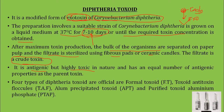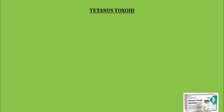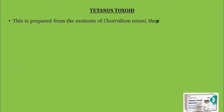After obtaining the crude toxin, the toxoid preparation can be made in any of the four official forms: formal toxoid, toxoid antitoxin floccules, alum precipitated toxoid, or purified toxoid aluminium phosphate. The next important preparation is tetanus toxoid, prepared from the exotoxin of Clostridium tetani.